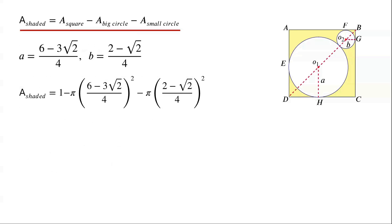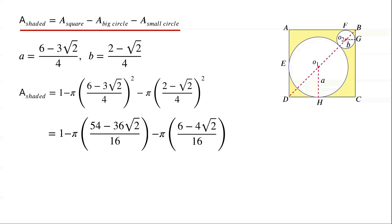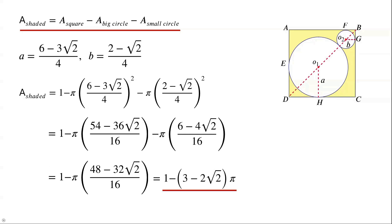So the area of the shaded region equals 1 minus π times [(6 minus 3 root 2) over 4] squared minus π times [(2 minus root 2) over 4] squared. We compute (6 minus 3 root 2) over 4 all squared equals (54 minus 36 root 2) over 16. The shaded area equals 1 minus (3 minus 2 root 2) times π.